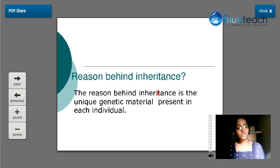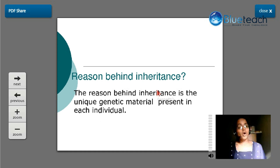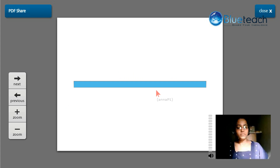The unique genetic material is responsible for the respective characteristics of each individual. The genetic material decides whether a person is dark or fair, intelligent or dull, active or not. Similarly, this genetic material gets transmitted during sexual reproduction, and the offspring inherits some characteristics from the parent. The entire reason behind inheritance of characteristics lies within the unique genetic material.